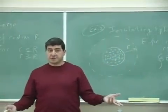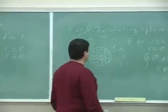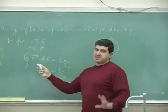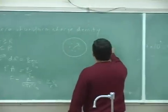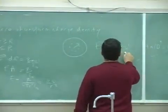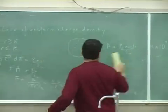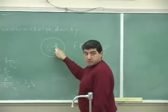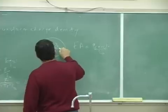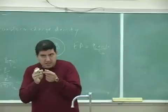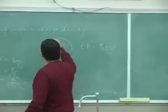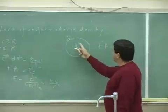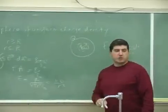If you're outside an insulating sphere it still looks like a point charge. But if you're inside, you apply Gauss's law again — the left side still comes out EA, that doesn't change. The only thing that changes is Q enclosed. Inside the little Gaussian surface, Q enclosed is not going to equal the total charge of the sphere.